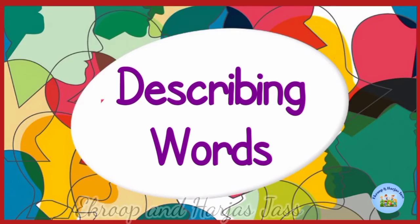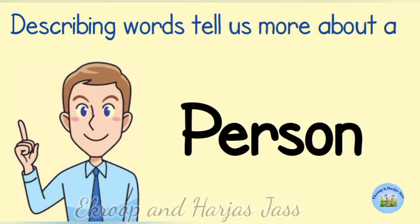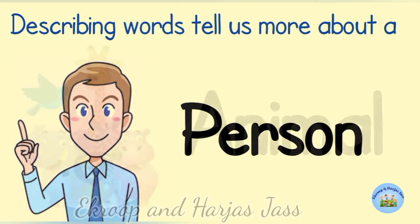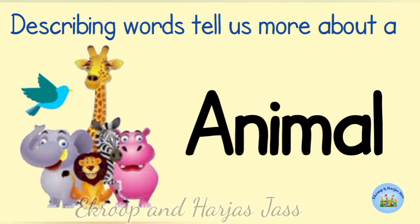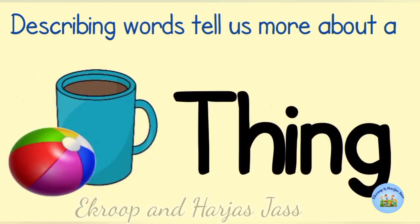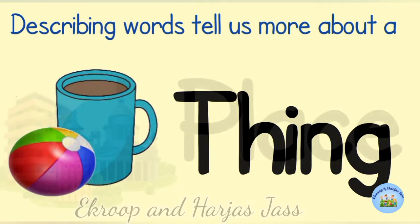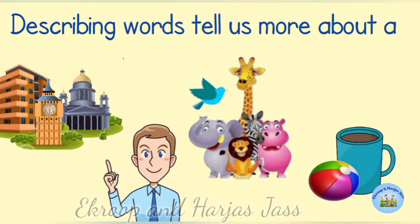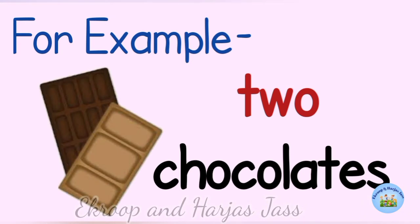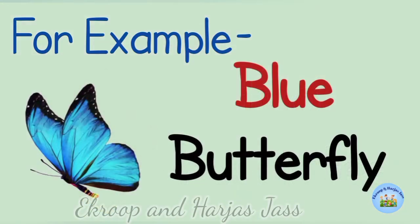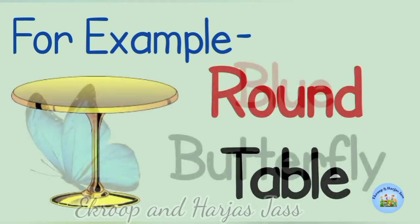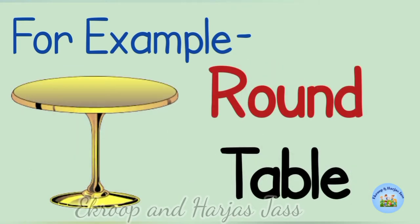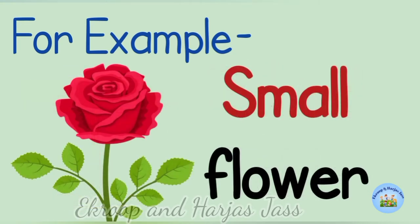Describing words tell us more about a person, animal, thing, and place. For example: two chocolates, blue butterfly, round table, and small flower.